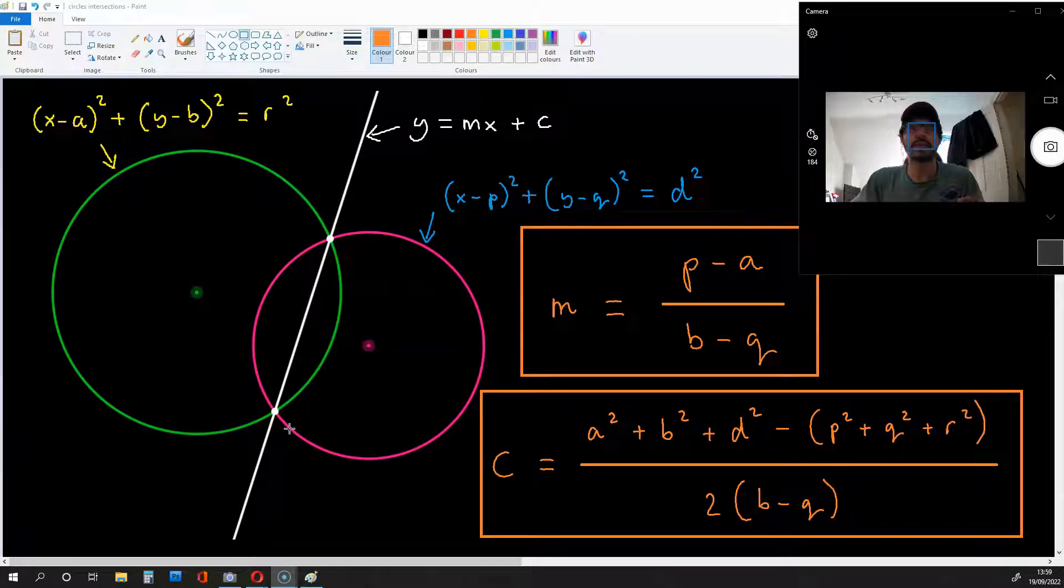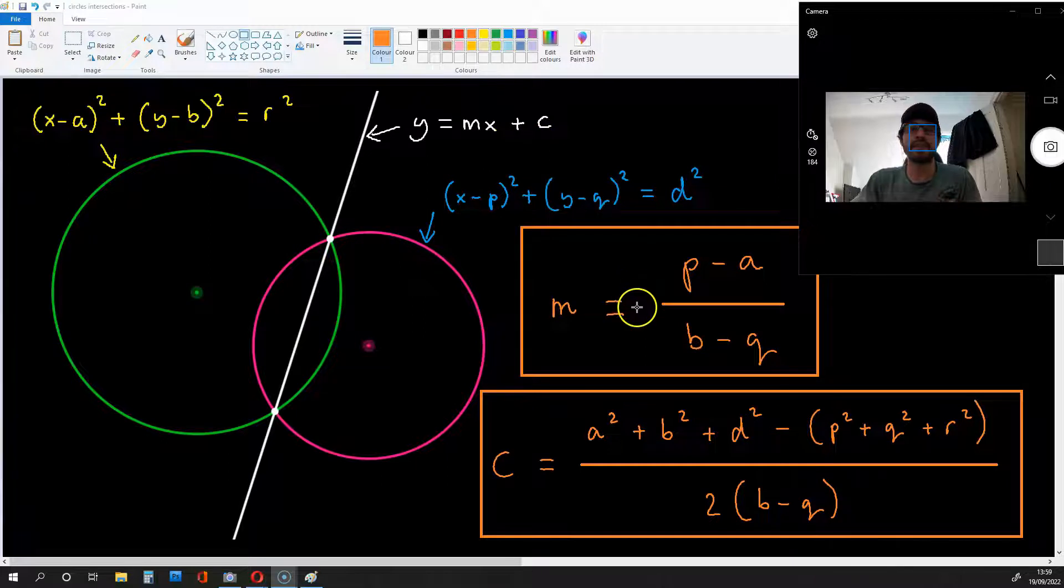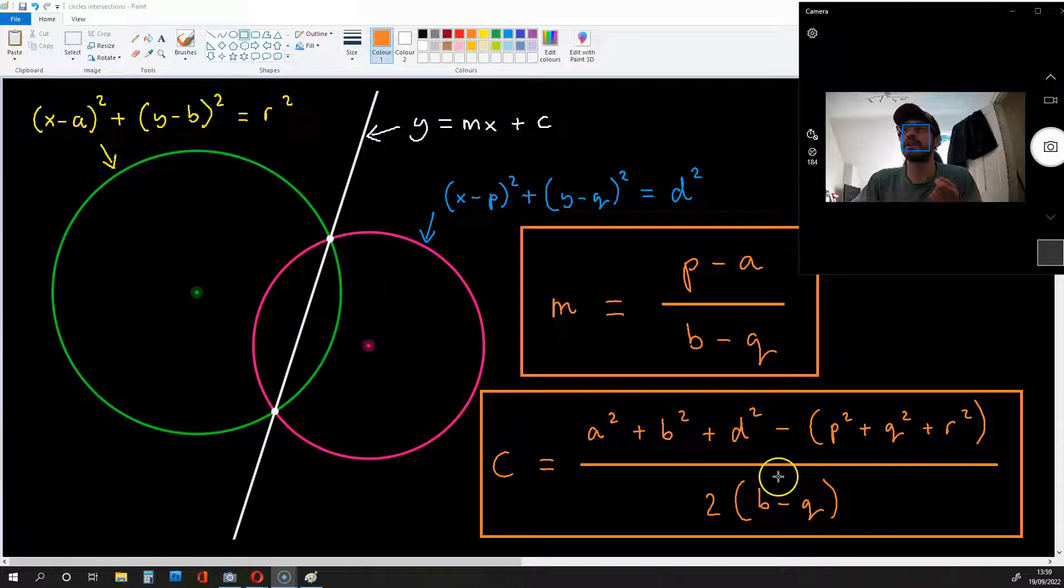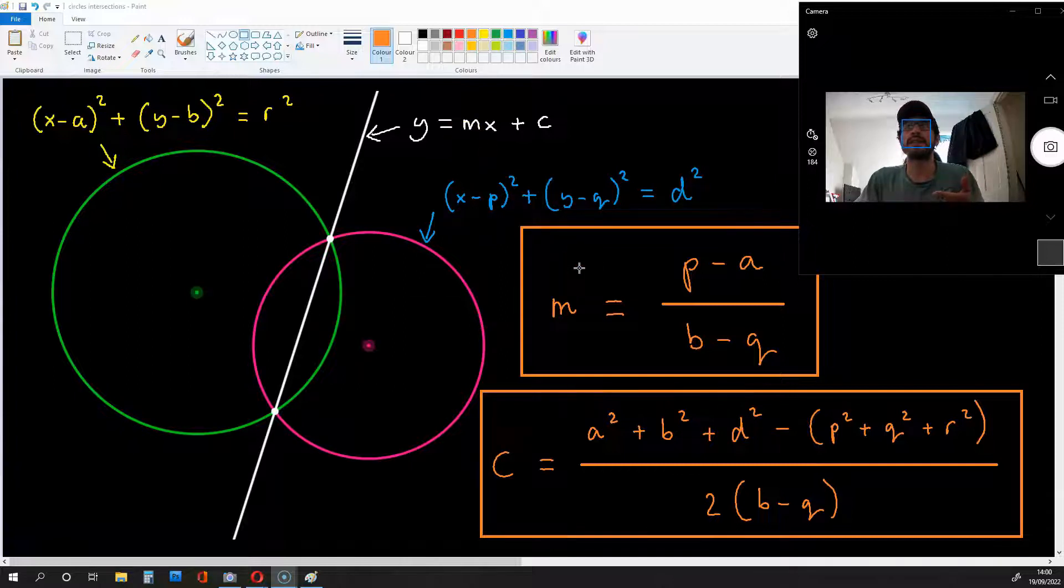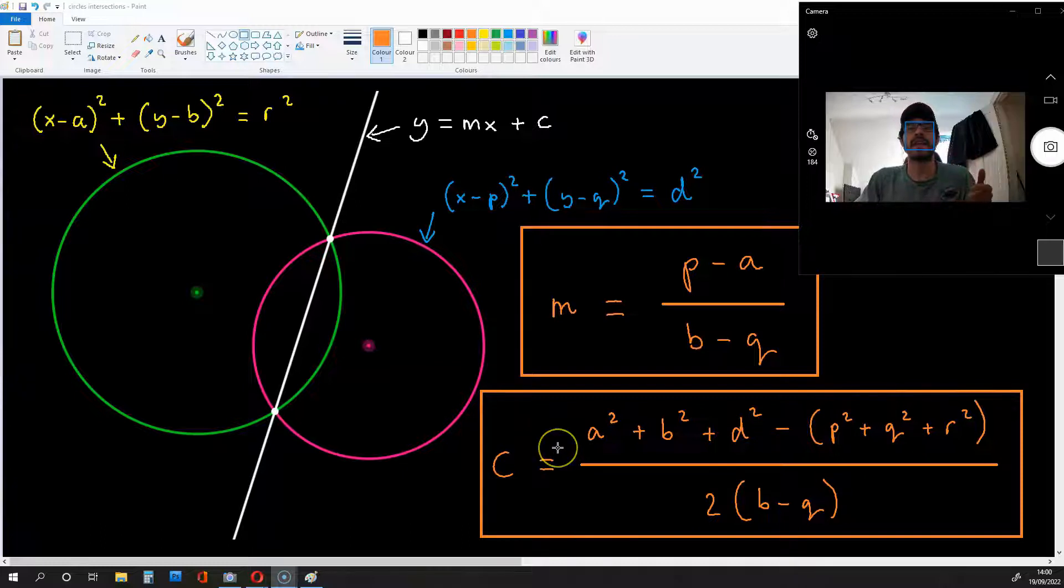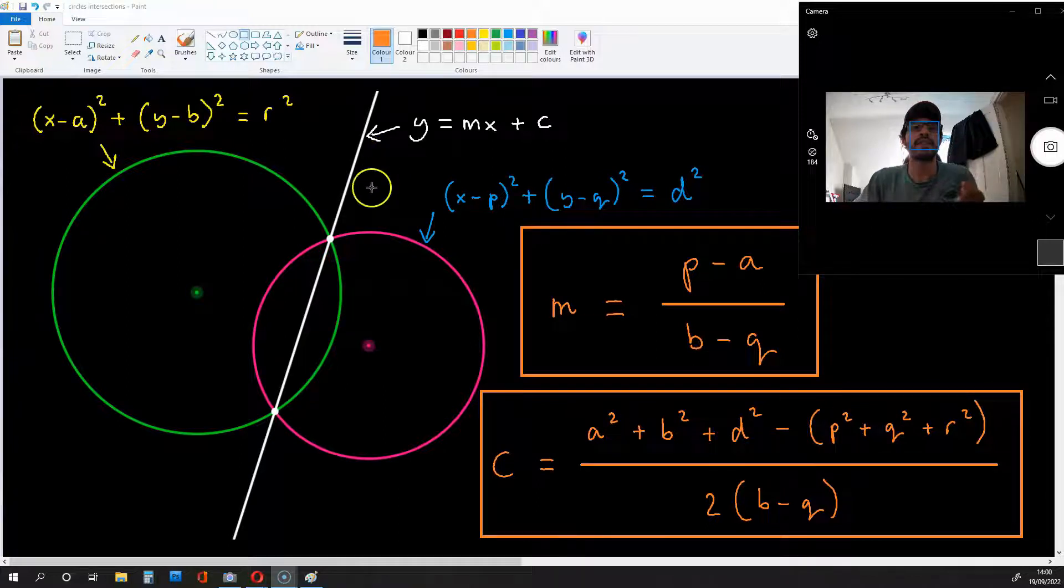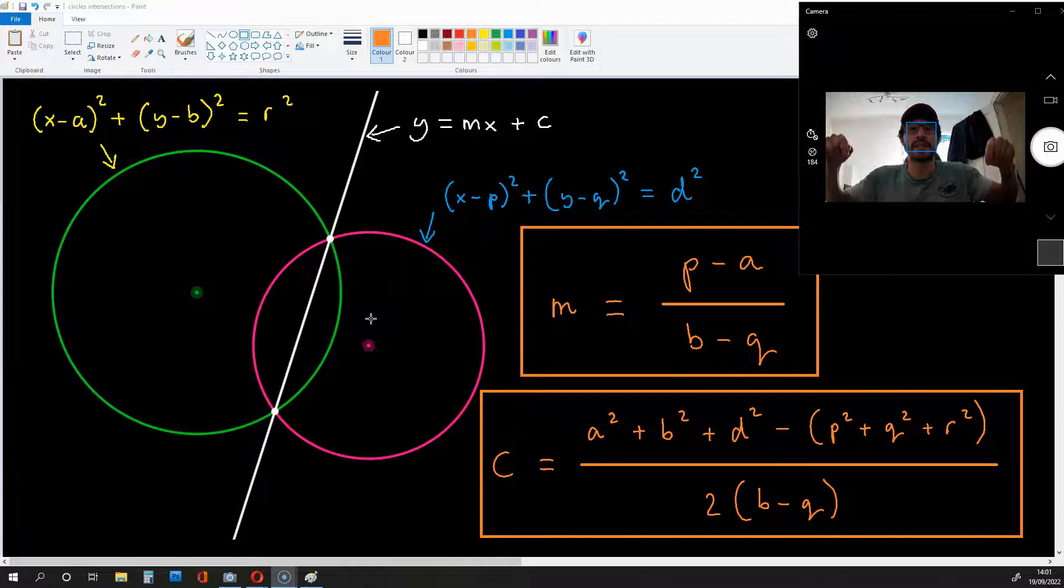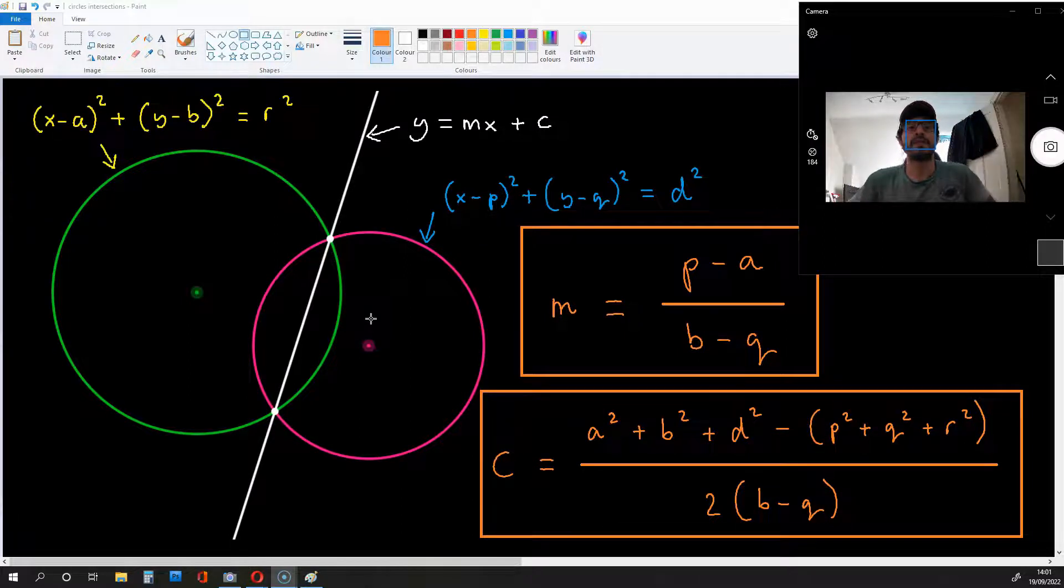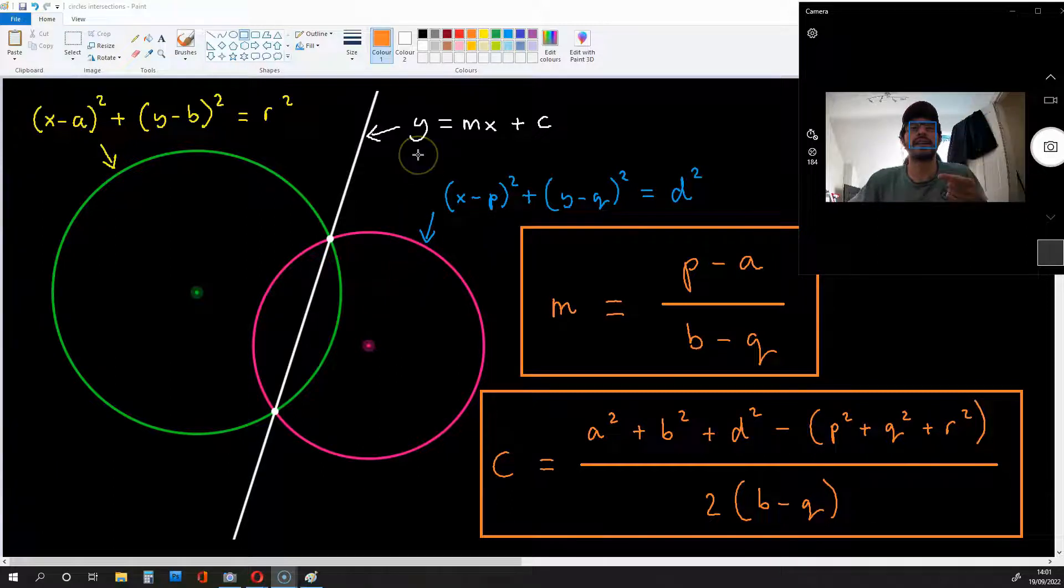Now, under these circumstances, for the line y equals mx plus c, m is going to have the value p minus a over b minus q and c is going to have this long value right over here. If you'd like to know why for this line m is equal to this and c is equal to this, then watch my previous video about how to derive the line that cuts through the intersection of two different circles. I've left a link to that video just below this one, so click on that link if you'd like to watch the video and find out how this line is derived.